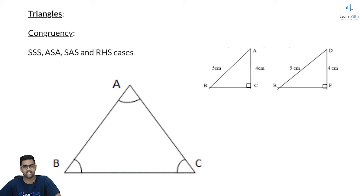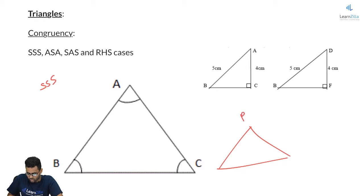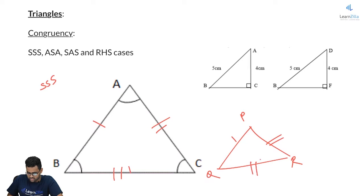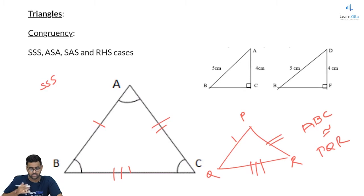The first is the SSS rule. You have two triangles ABC and PQR with all three sides of the triangles exactly equal. So then you can say that triangle ABC is congruent to triangle PQR, which means both these triangles are one and the same. That is the congruency under the SSS rule.